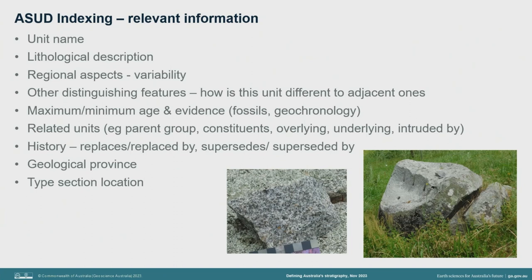Indexing of publications and data entry are ongoing activities to maintain the currency of the database, to help fulfil one of Geoscience Australia's Strategy 2028 goals — enabling an informed Australia. GA is also ensuring that the database complies with FAIR data principles: findable, accessible, interoperable, and reusable data. The information captured in the indexing process includes the kinds of information that are also important criteria in defining a stratigraphic unit.